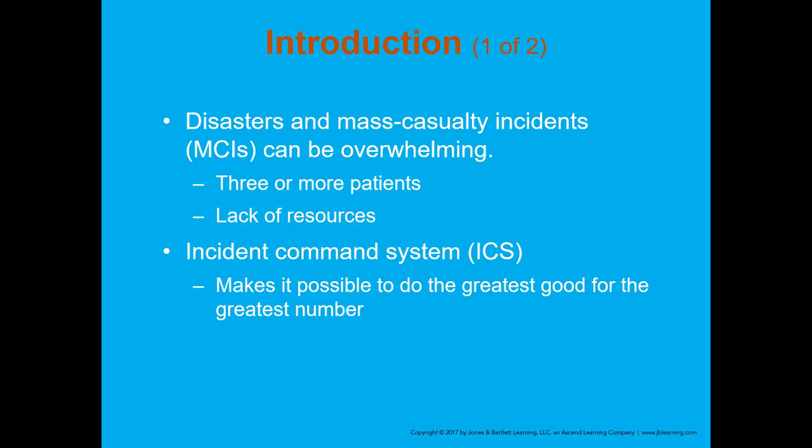Disasters and mass casualty incidents can be overwhelming. Generally, those are defined as three or more patients. However, a better definition for a mass casualty incident would be an incident that has more victims than you have resources. Your resources have been exhausted by the number of patients, and you now need additional help — that's what makes something a mass casualty incident. Not always necessarily three or more patients. I've been on auto accidents with four or five victims and wouldn't classify those as mass casualty incidents, especially working in the city where we've got multiple resources and were easily able to handle that type of run.